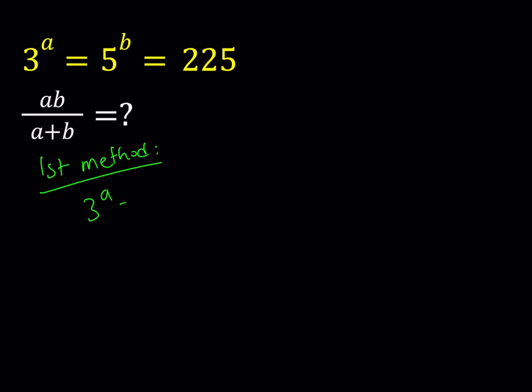Since 3 to the power a is 225, by using the definition of logarithms, I can write this as log base 3 of 225 equals a. And since 5 to the power b equals 225, I can say that log base 5 of 225 equals b. If you use the definition, you can get these results.